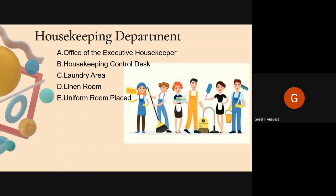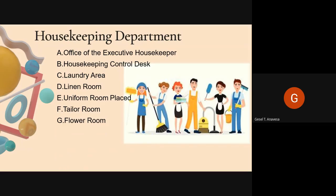The Uniform Room is where uniforms are collected, stored, and distributed to hotel staff. Stacks are only touched when uniforms or linens in circulation fall short due to damage or loss. The Tailor Room, also called the sewing room, is where stitching and repair of linen and uniforms takes place. The Flower Room is ideally an air-conditioned room to keep flowers fresh for arrangement throughout the hotel, in guest rooms or public areas.